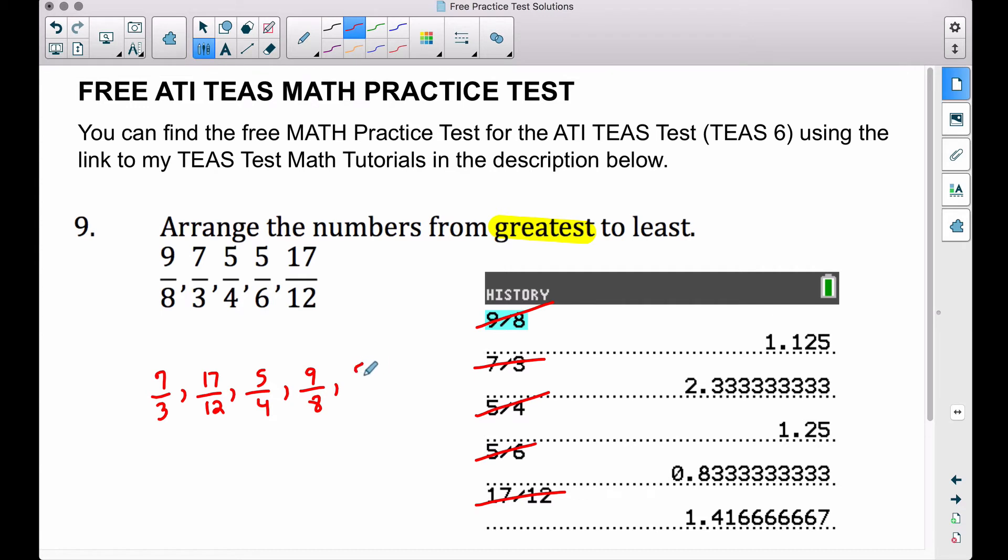Then we have the 9/8, that's the dollar and 13 cents, and then last but not least the 5/6. Now the 5/6 should definitely be our least one because that's the only fraction up here that is not improper. All of these other fractions up here are improper fractions, meaning our numerator is bigger than our denominator.